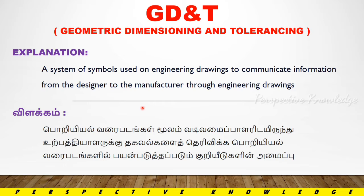For example, there is a diameter. In English we say diameter, and in Tamil we also say diameter. If there is a foreign language — Korean or Chinese — we still have to manufacture it and mention it clearly. So if there is any problem in manufacturing, we have to create symbols. If there are symbols, we can understand them.